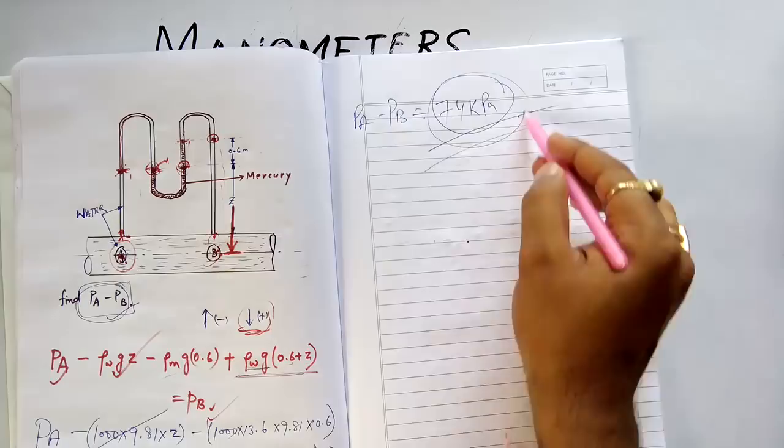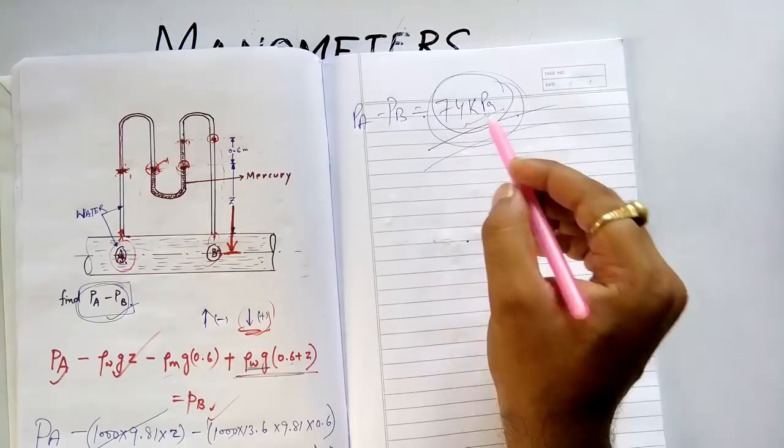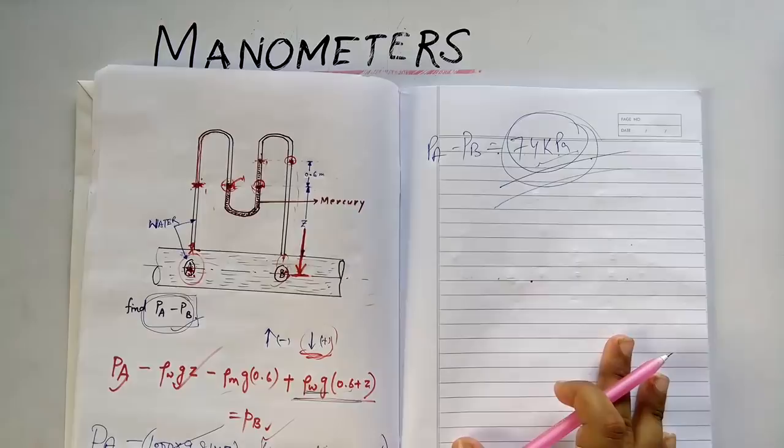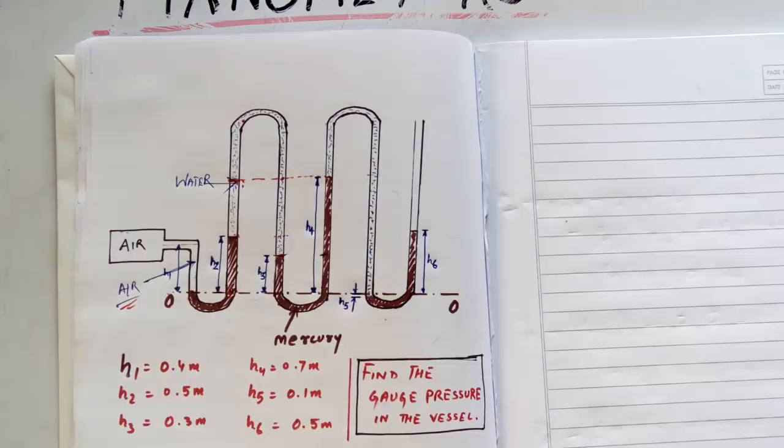You solve it, and if you don't get this answer please comment in the comment box. I am sure that if you solve this equation you will get the answer. Now I will solve the next problem where your concepts will get much more clear. This is a problem of a continuous manometer or multi-tube manometer.